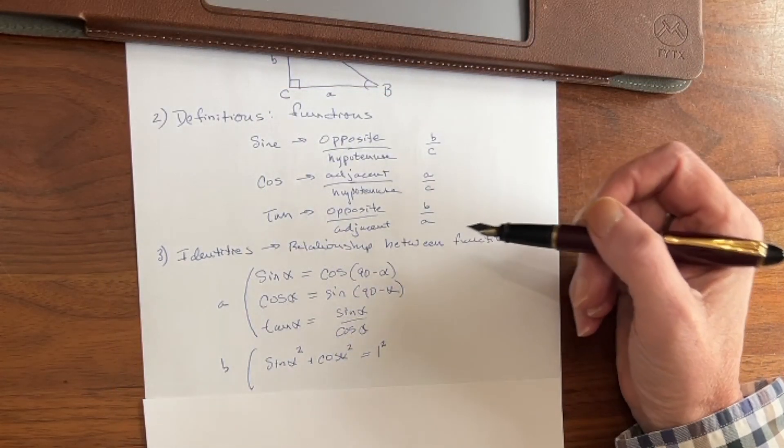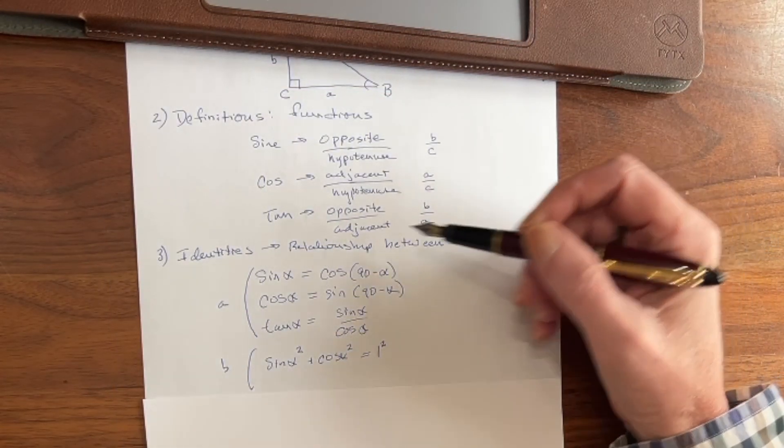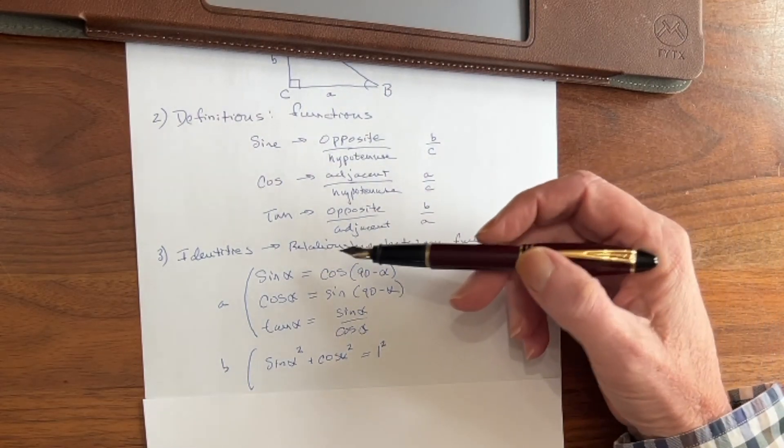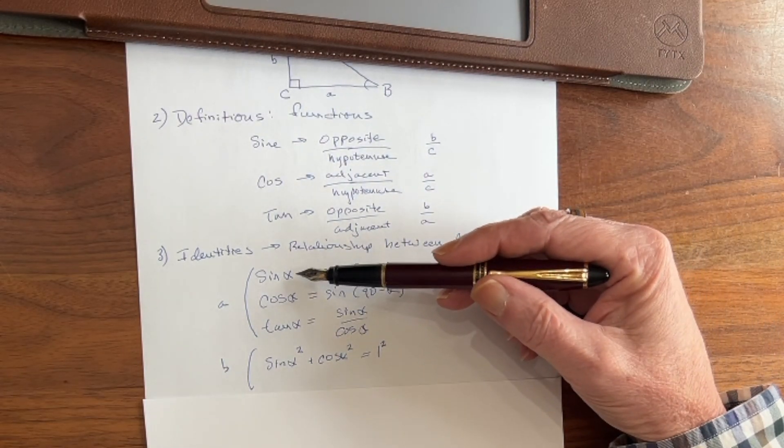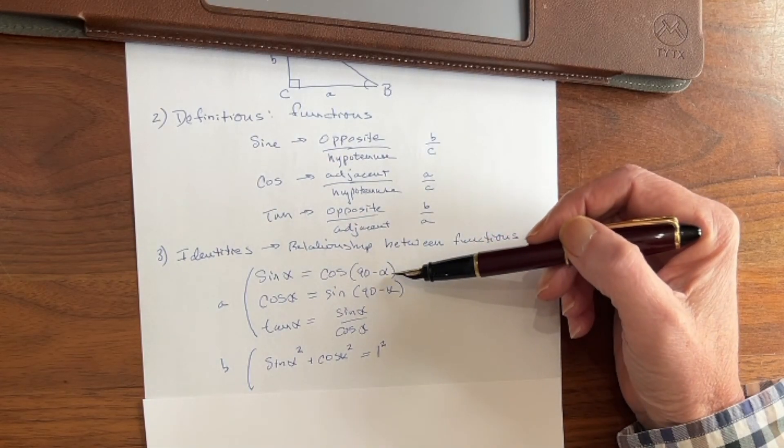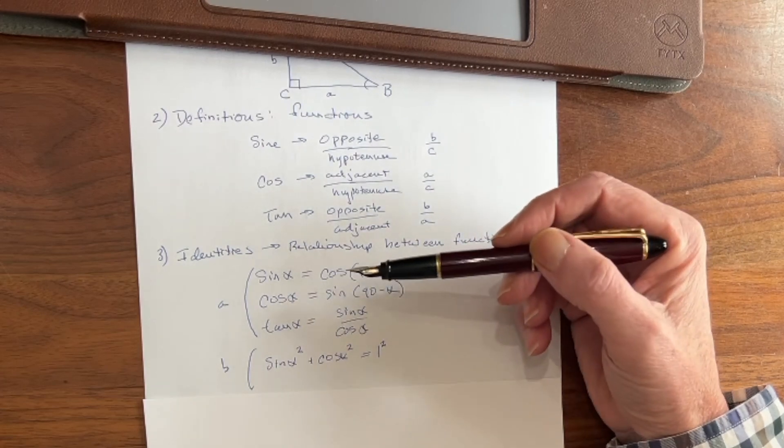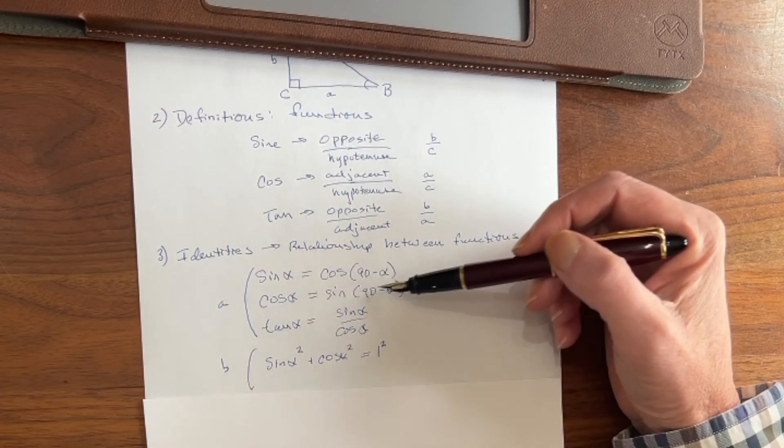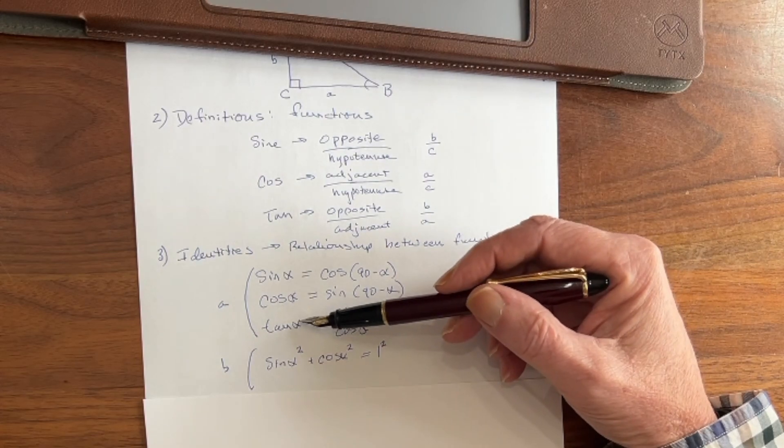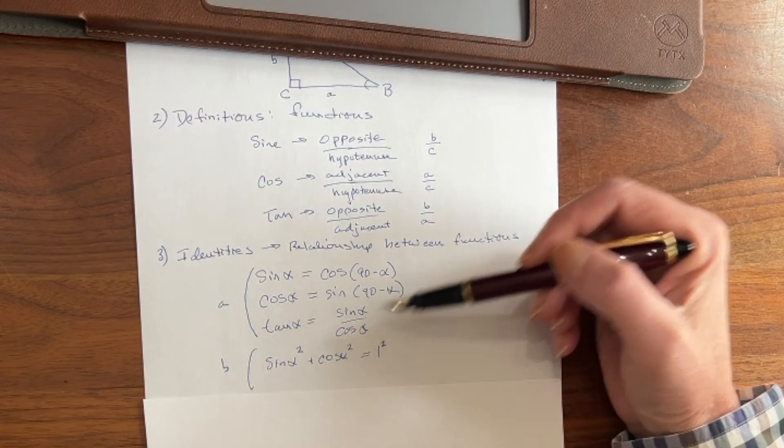Now next we have something called identities in trigonometry, and these are the relationships between functions. So for example, the sine of angle alpha is the cosine of 90 degrees minus angle alpha. Likewise, the cosine of angle alpha is the sine of 90 degrees minus angle alpha, and the tangent is the sine over the cosine.